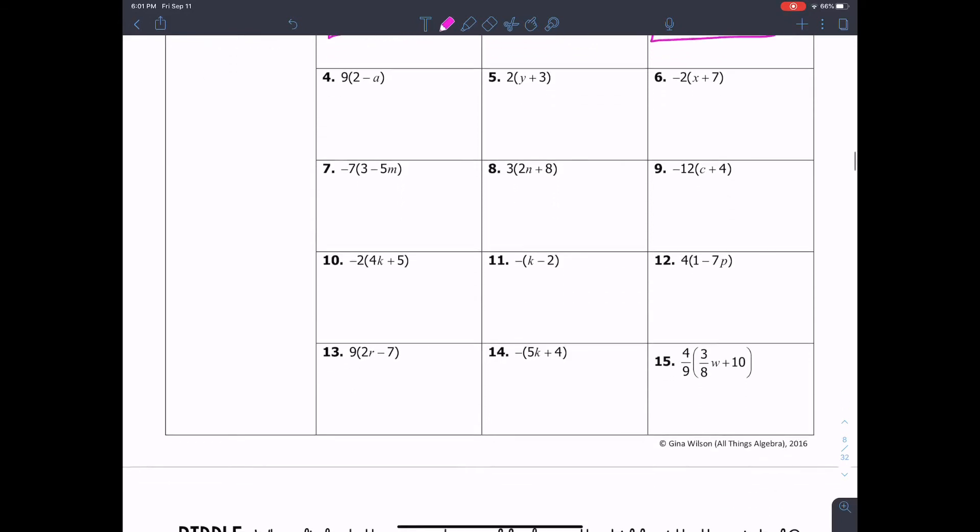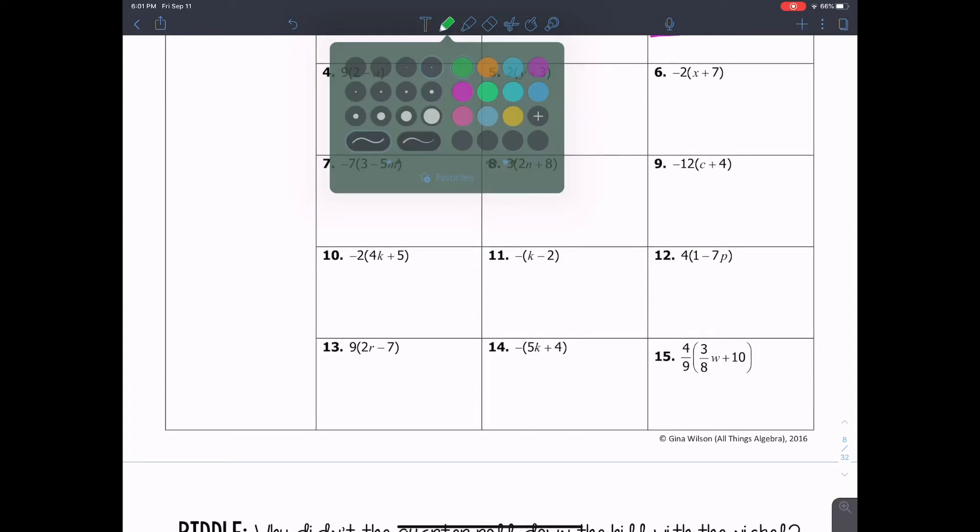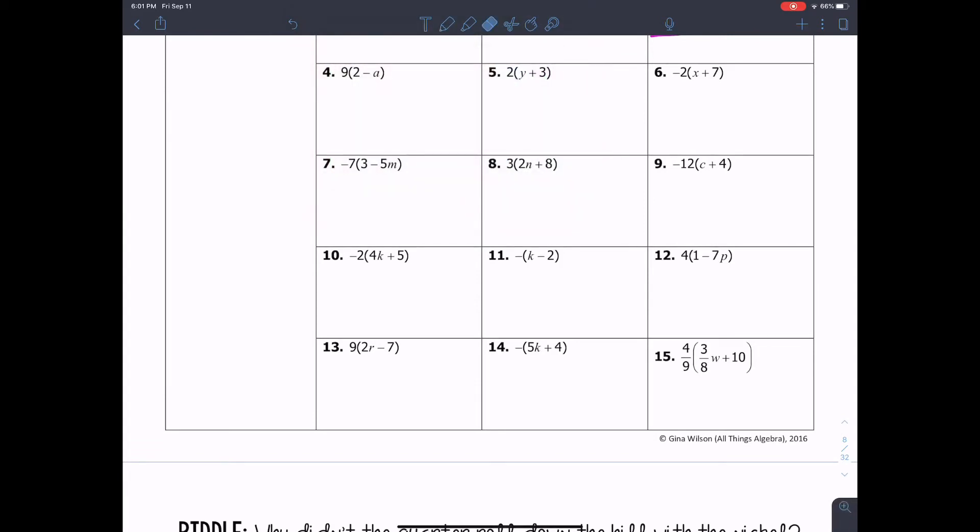Let's take a look at the next ones. Remember, if you haven't done these, pause. Do them on your own. Take your time. You're not going to learn if all you're doing is copying. 9 times 2, which is 18. 9 times negative 8 is negative 9A. 2 times Y is 2Y. 2 times 3 is 6. Negative 2 times X is negative 2X. Negative 2 times 7 is negative 14.